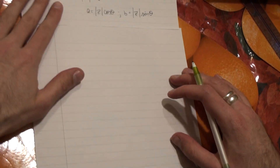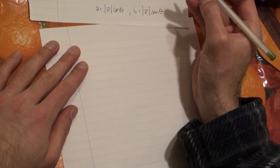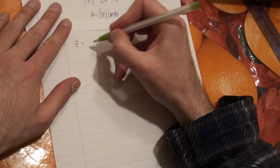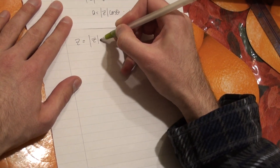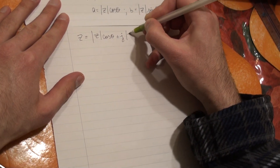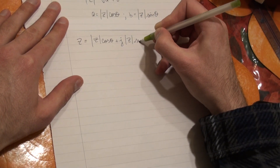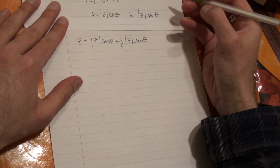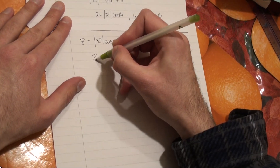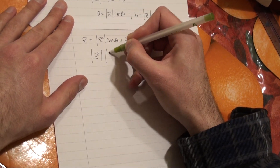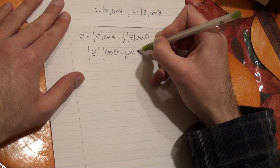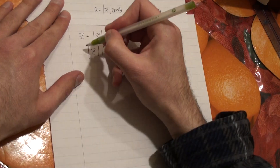We can rewrite Z by plugging in what A and B are: A is magnitude Z cosine theta, plus J times B which is magnitude Z sine of theta. We have a common factor — the magnitude of Z — so we take that out, leaving cosine theta plus J sine theta inside the parentheses. This equals Z.